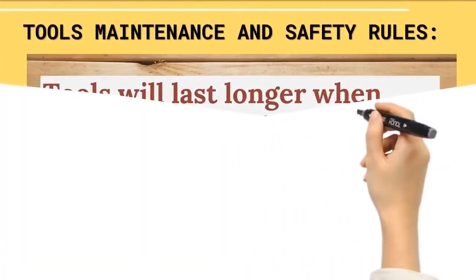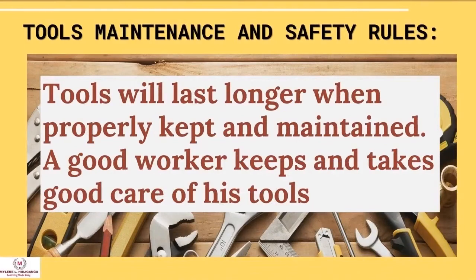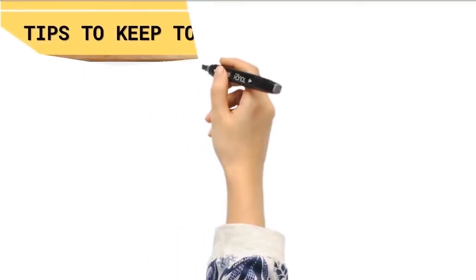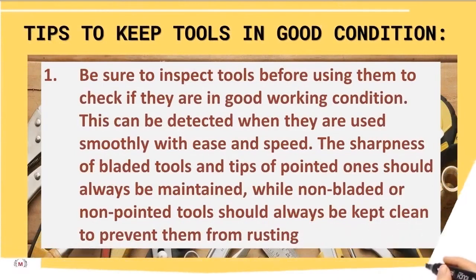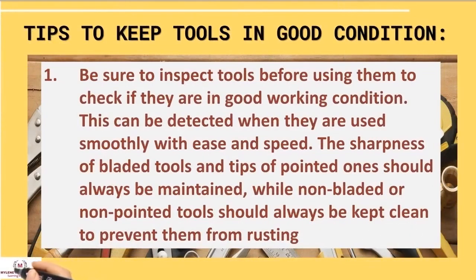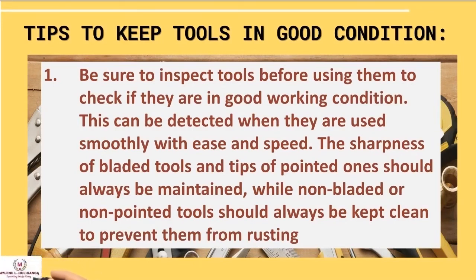Tools maintenance and safety rules. Tools will last longer when properly kept and maintained. Tips to keep tools in good condition: Number one — inspect tools before using them to check if they are in good working condition. This can be detected when they are used smoothly with ease and speed. The sharpness of bladed tools and tips of pointed ones should always be maintained, while non-bladed or non-pointed tools should be kept clean to prevent rusting.